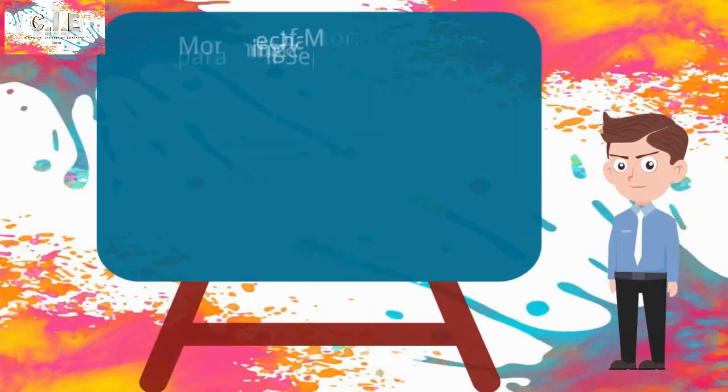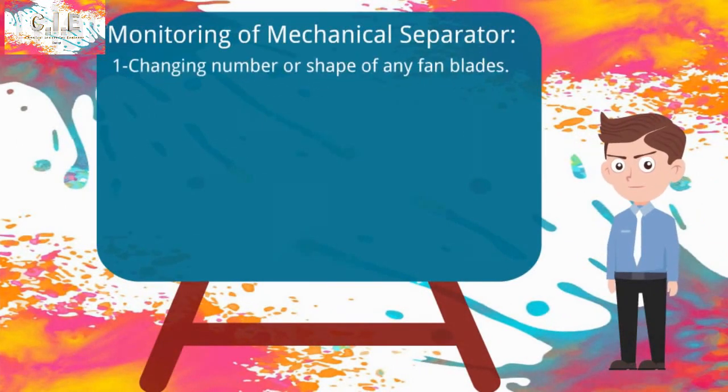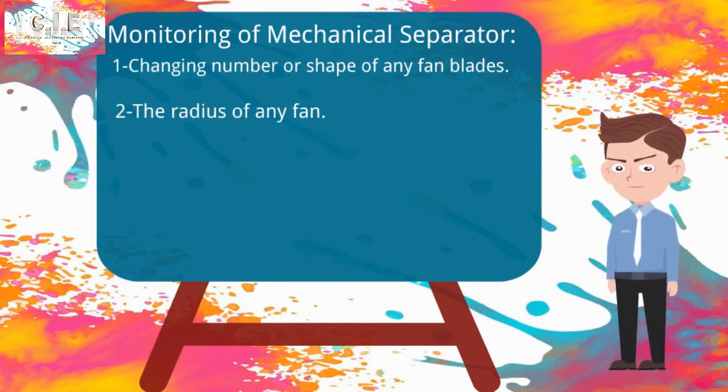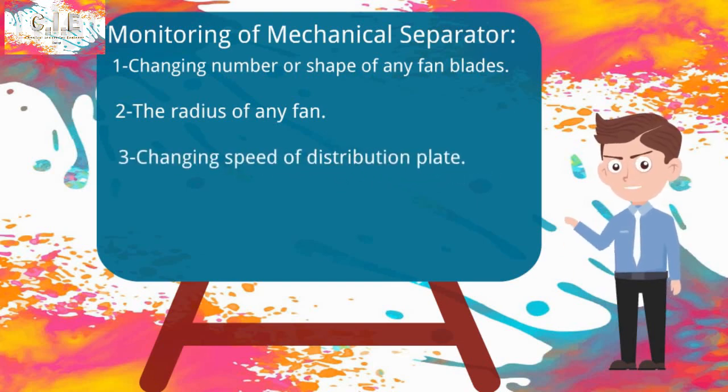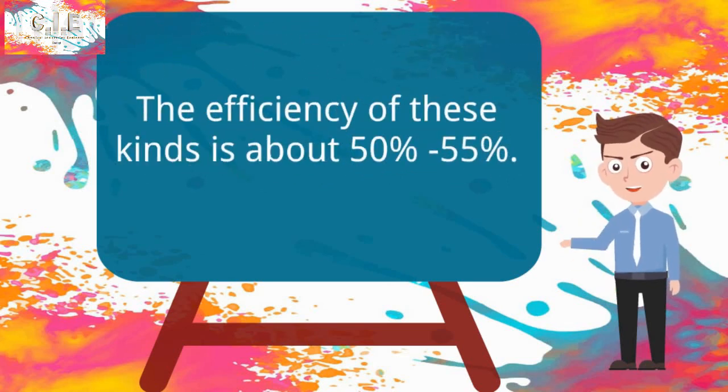Operating adjustments are done by changing number or shape of fan blades or radius of the fan for either main or secondary fans, or it's adjusted by changing speed of distribution plate. The efficiency of grid and mechanical separators is about 50 to 55 percent.